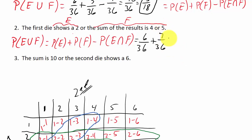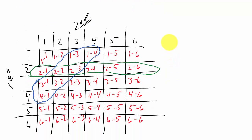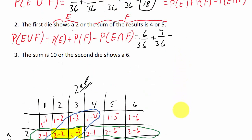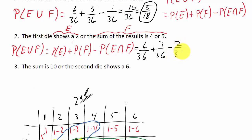We subtract what they have in common. The outcomes (2, 2) and (2, 3) appear in both E and F — that's where they overlap. So P(E ∩ F) = 2/36. The answer is 6/36 + 7/36 − 2/36 = 11/36.